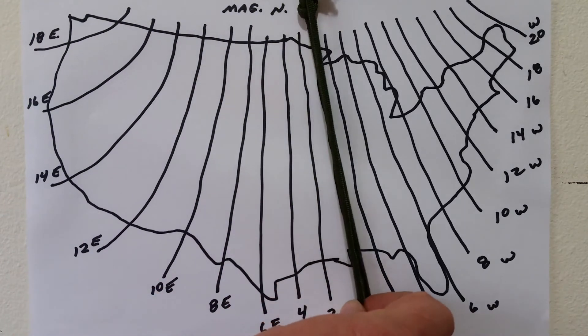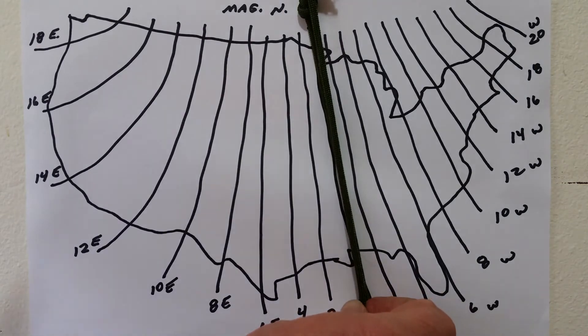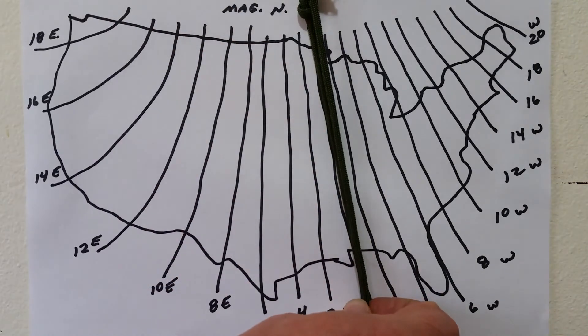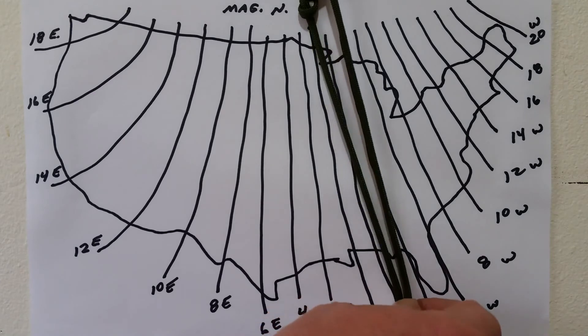And as we move back down here to zero, we're back on zero again and we have zero declination. And then we move to the east, we have west declination.